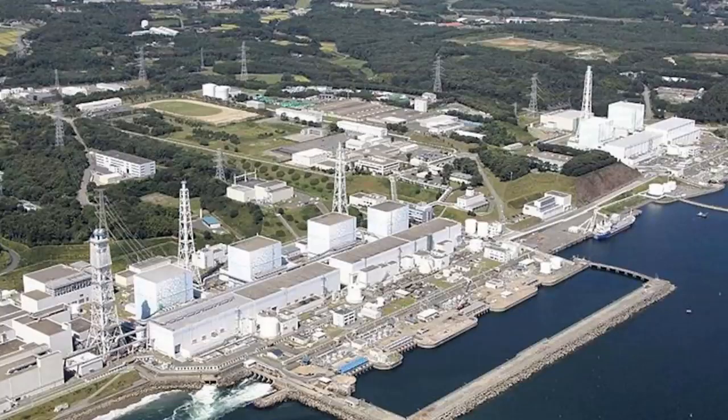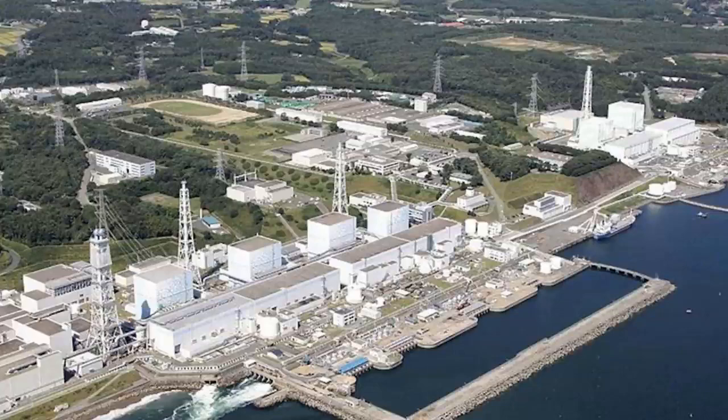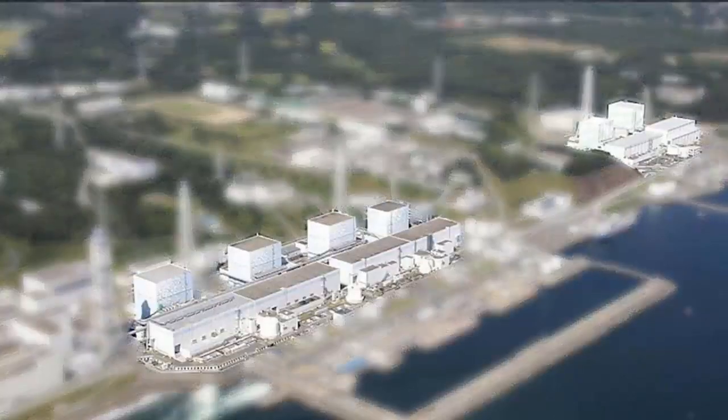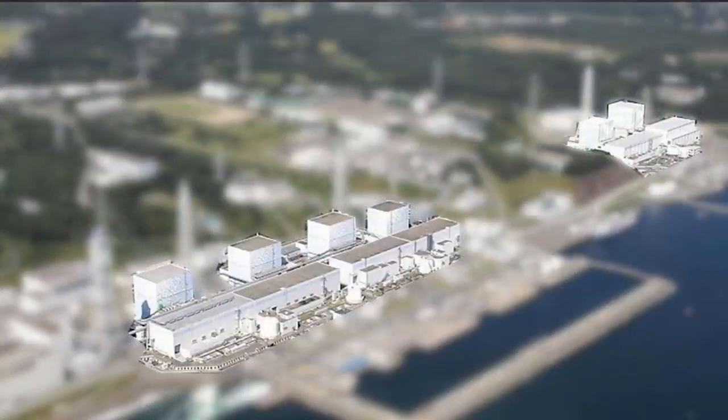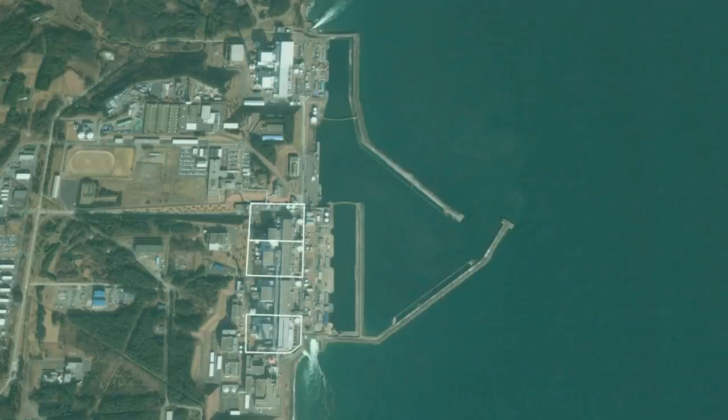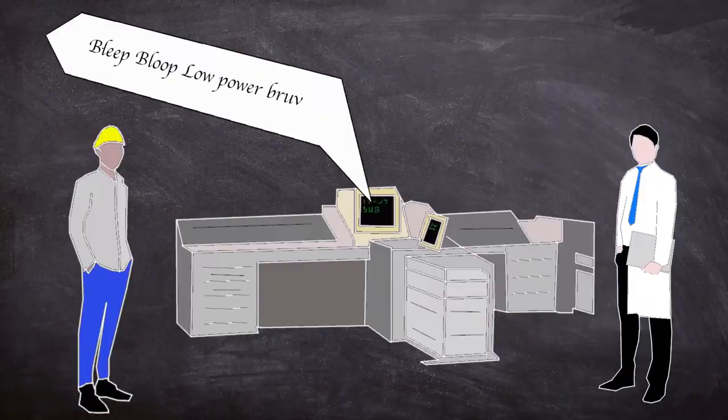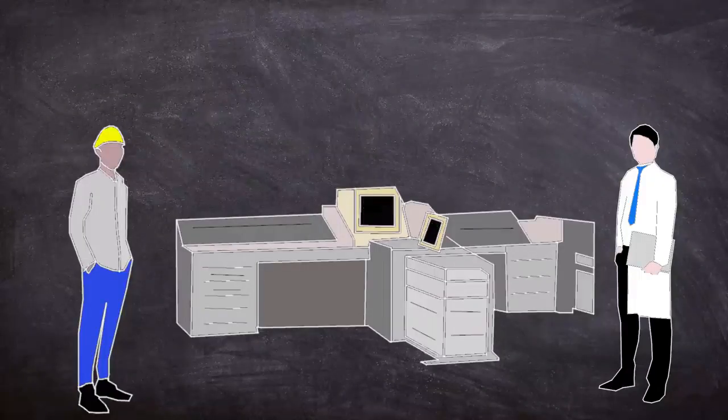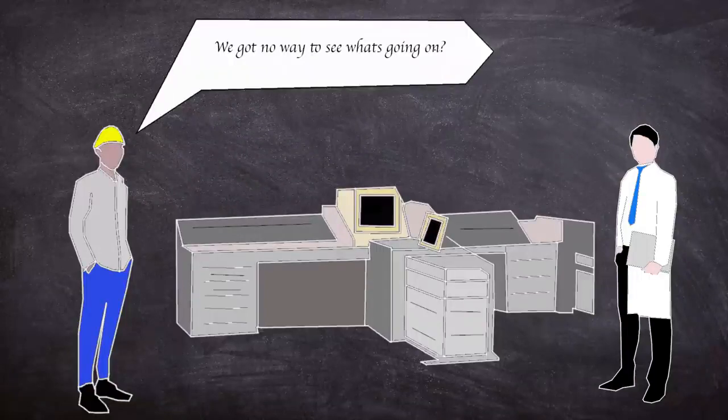One air-cooled generator survived and continued to supply emergency power to unit 6. This meant units 1 to 5 had total power failure. The power station was designed to work off DC batteries for up to 8 hours in the event of AC power loss. However, some battery systems were also affected by flooding. Power started to dwindle in units 1, 2, and 4 fifteen minutes post-flood. Operators of units 1 and 2 could no longer monitor reactor pressure, water levels, or key systems.